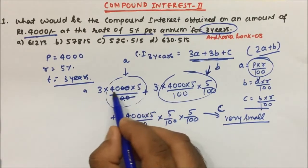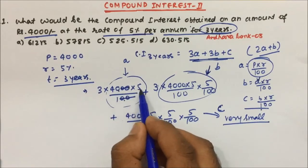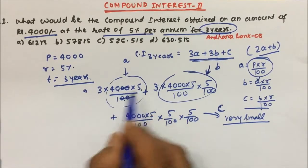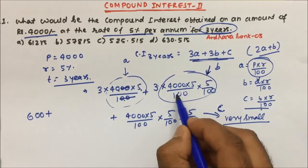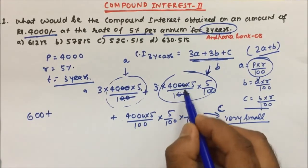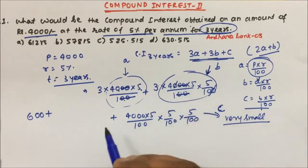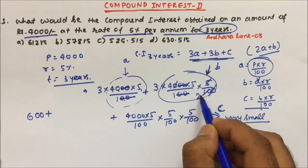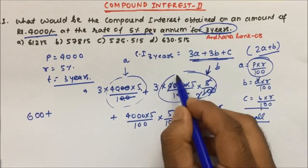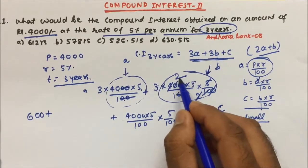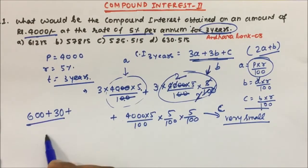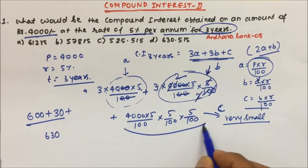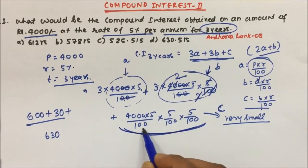First, simplifying: the double zeros cancel. 3 into 40 is 120, 120 into 5 is 600. Then, removing zeros: 5 twos are 10, 10 into 3 is 30. So what we get here is 630.